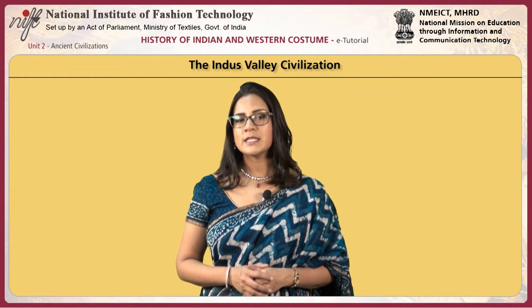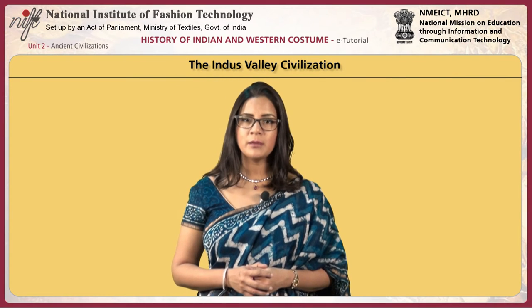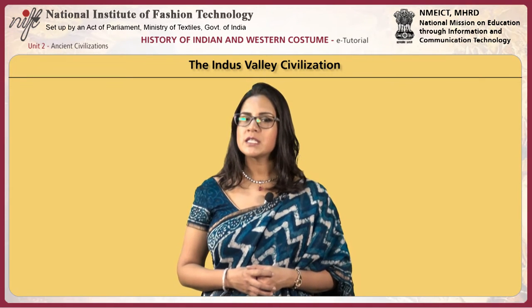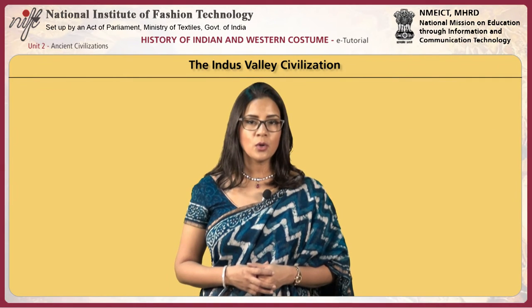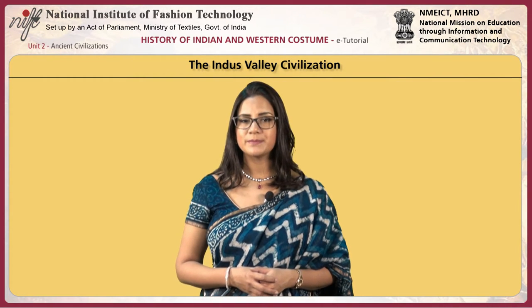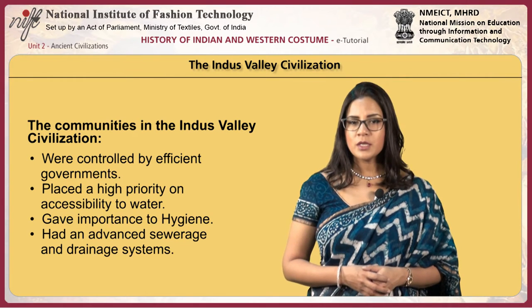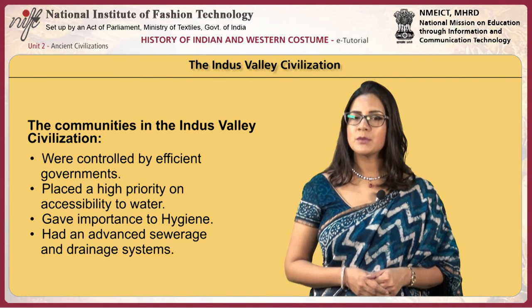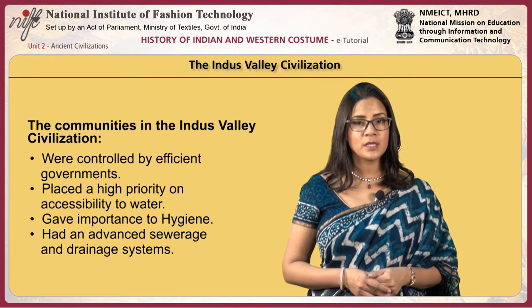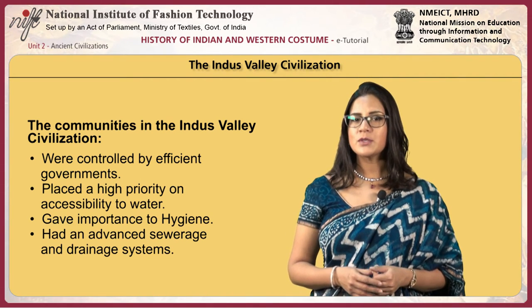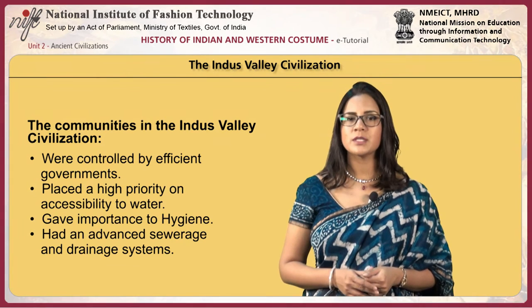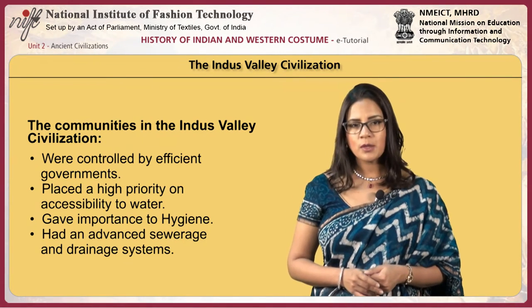The cities of the Indus Valley Civilization were well organized and solidly built out of brick and stone. Their drainage systems, wells and water storage systems were the most sophisticated in the ancient world. They also developed systems of weights and trade, made jewelry, and game pieces and toys for their children. The quality of municipal town planning indicates these communities were controlled by efficient governments that placed a high priority on accessibility to water — suggesting the influence of a religion which places emphasis on ritual washing, much like modern Hinduism.